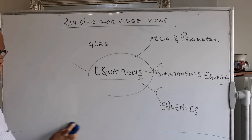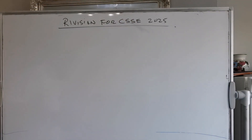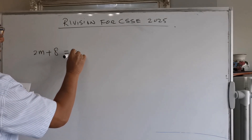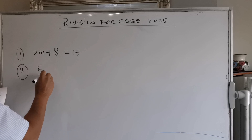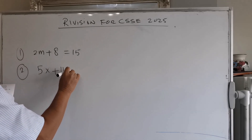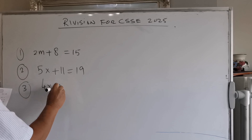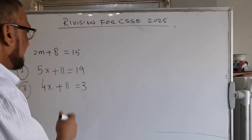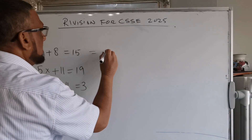Let me write down a couple of questions — you may pause the video and check the answers later on. Question one: 2m + 8 = 15. Question two: 5x + 11 = 19. Question three: 4x + 11 = 3. These are equation questions you already know how to solve, so you can pause the video and come back later on.